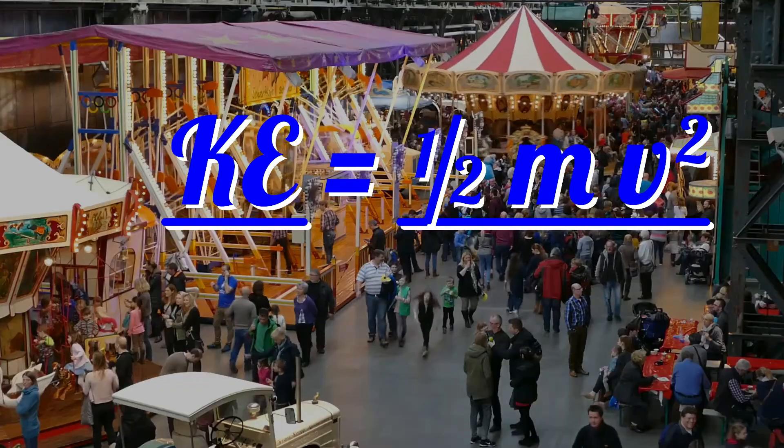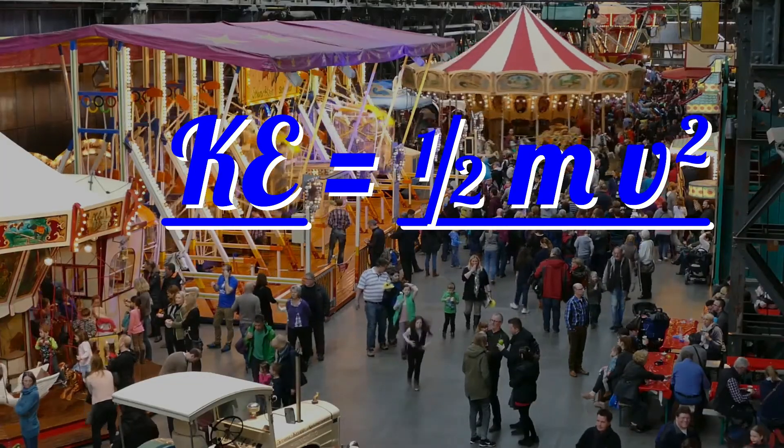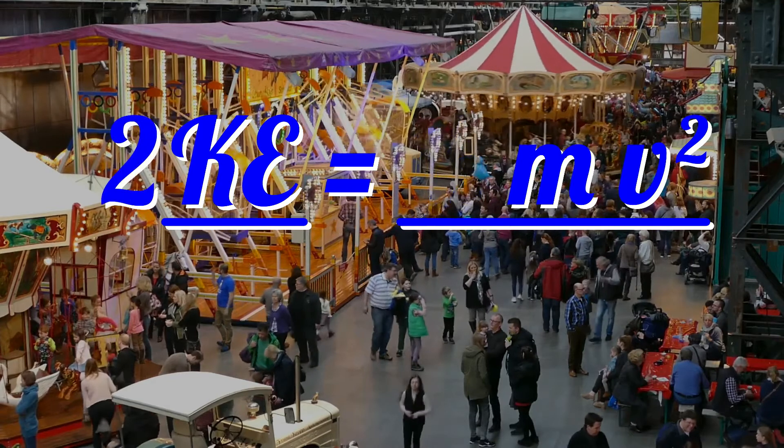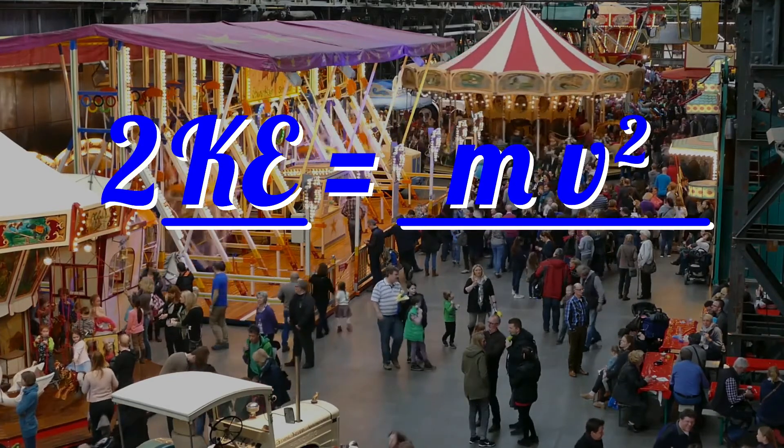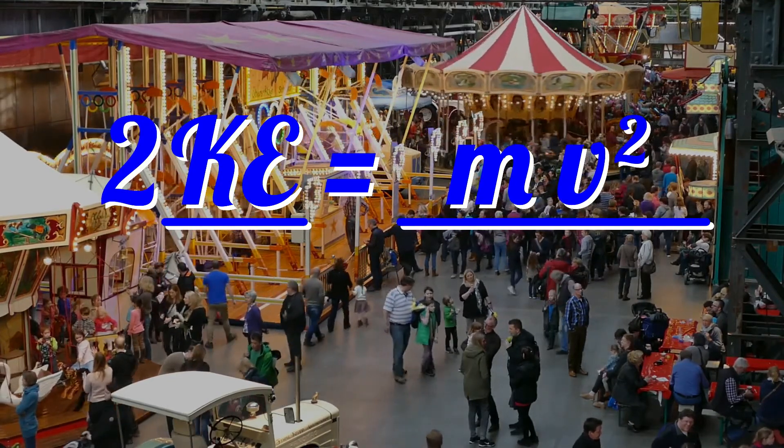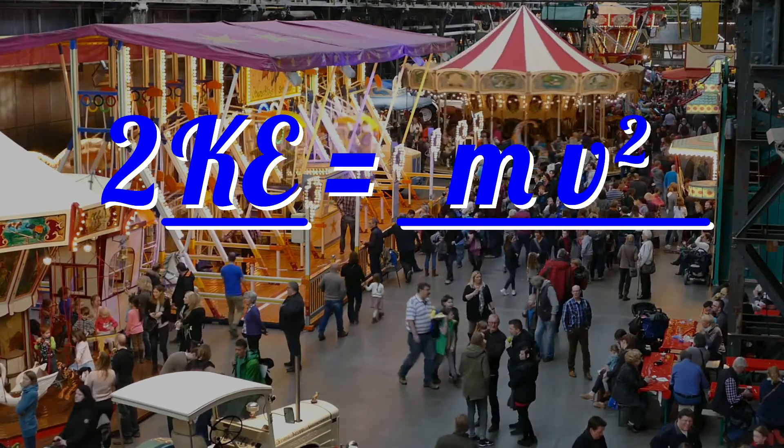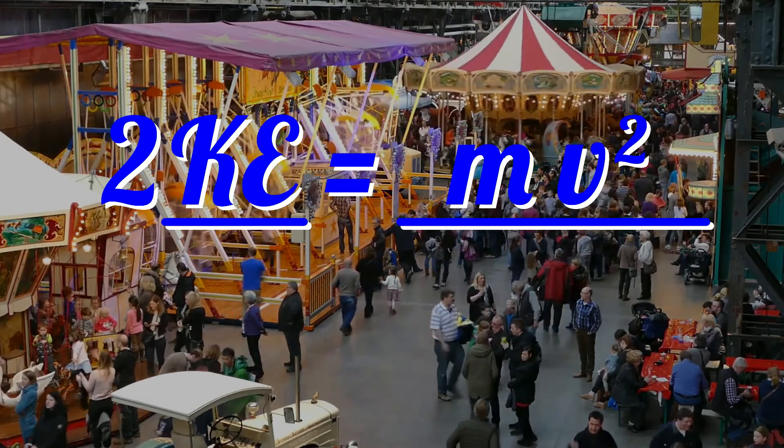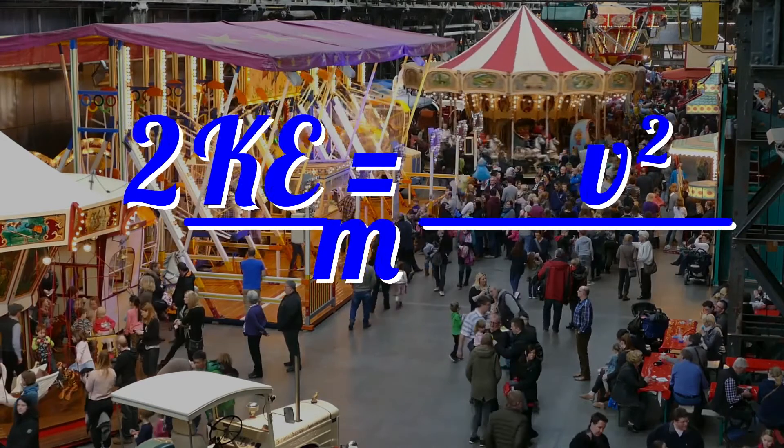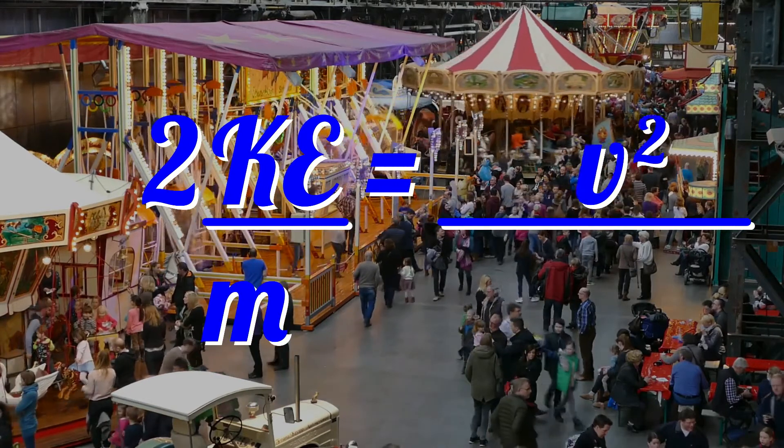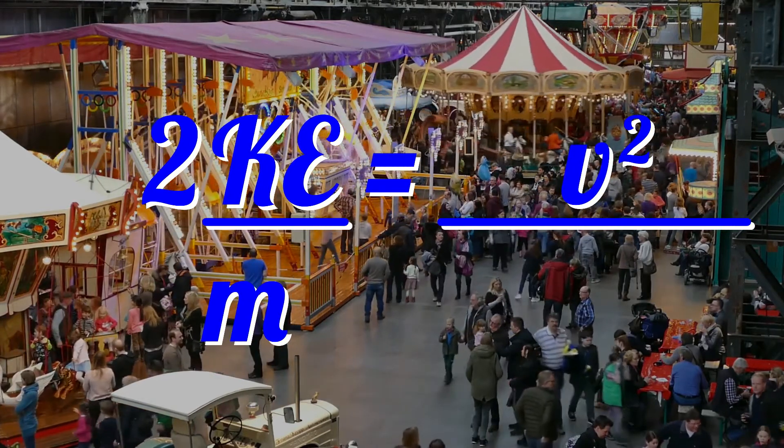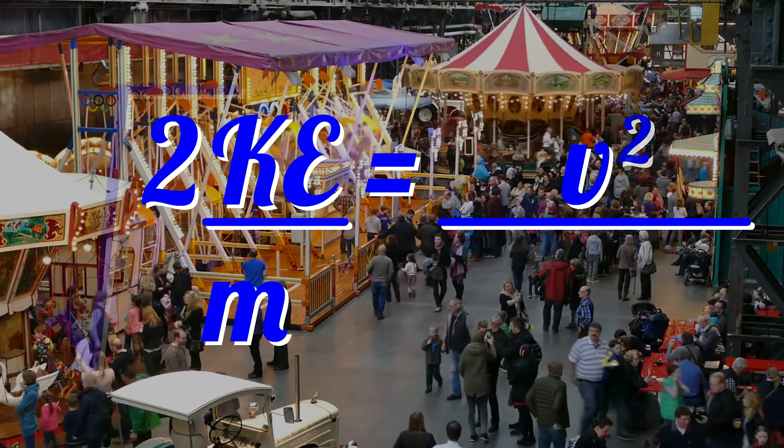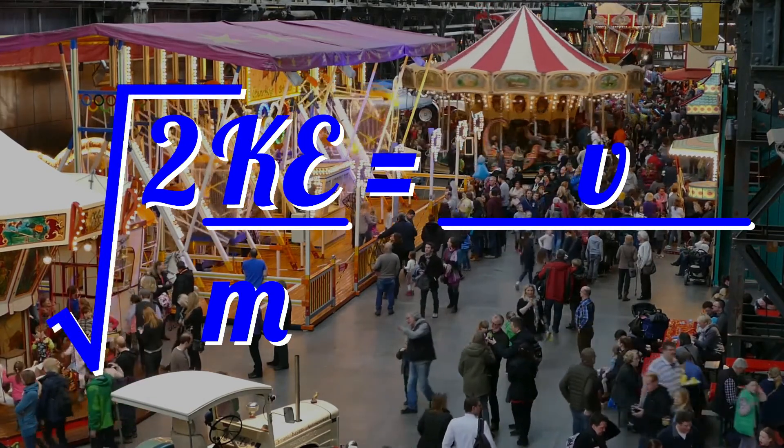To make the velocity the subject of the equation, if you know the mass and the kinetic energy, first cancel out the half by doubling both sides as we did before. 2KE equals mv squared. Then divide through by mass, that is, move the m under the 2KE. 2KE over m equals v squared. Then square root both sides to cancel out the square on the v.